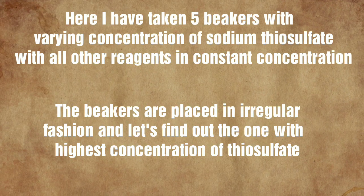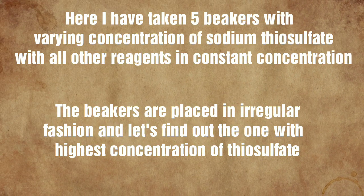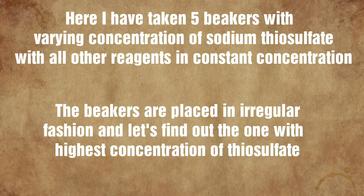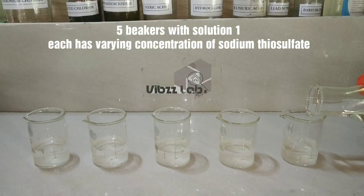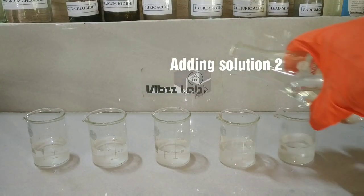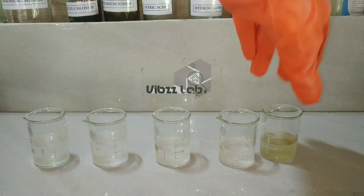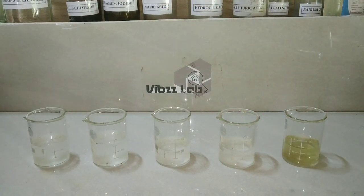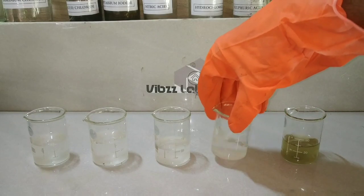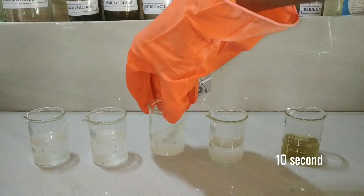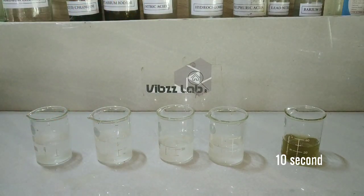Now we will see the chemical kinetics. I have taken 5 beakers with varying concentrations of sodium thiosulphate, with all other reagents at constant concentration. Now I will be adding solution 2 into all these beakers. You can see that as soon as I have added the solution, the color change has occurred in the first beaker within 10 seconds. Now we will wait for the next beaker to change color.